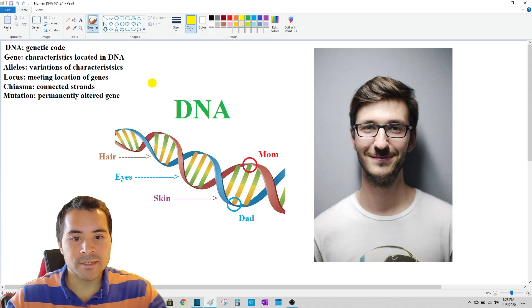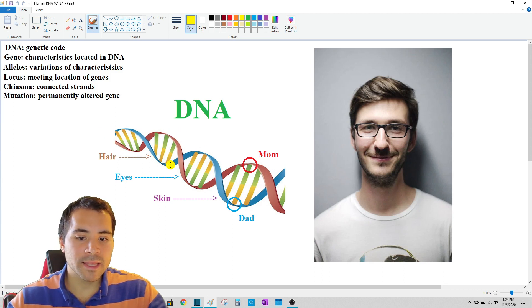So DNA is your genetic code. What makes you, you. A gene is a characteristic located in your code of DNA. So here we have your DNA strand. This curvy spirally thing is DNA. And it contains the coding that makes you look like you. Each one of these ladder-like strands that you see right here are called locus points. At each one of those locus points contains different genes that all combine in the end to make you look like you.